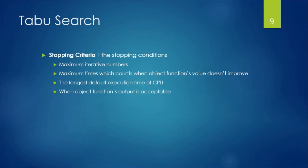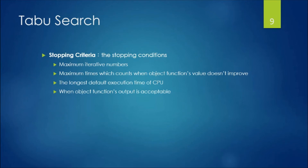Additional stopping criteria: the longest default CPU execution time; or when the objective function's output is acceptable — that is, when the objective function value reaches within an acceptable range. These are the main stopping criteria used in Tabu Search; other stopping criteria commonly used in Simulated Annealing or Genetic Algorithm may also be incorporated.